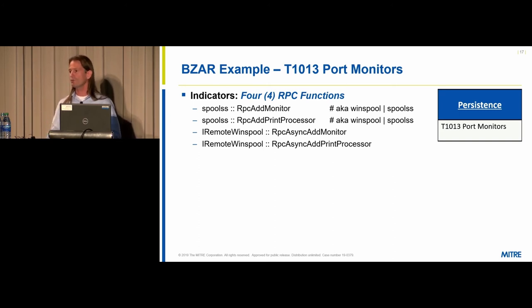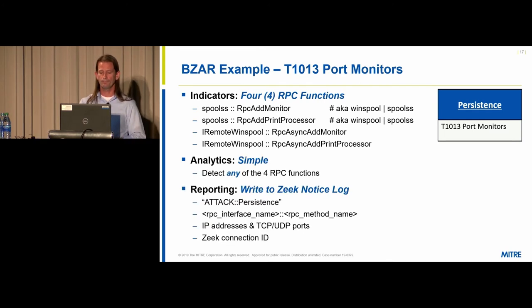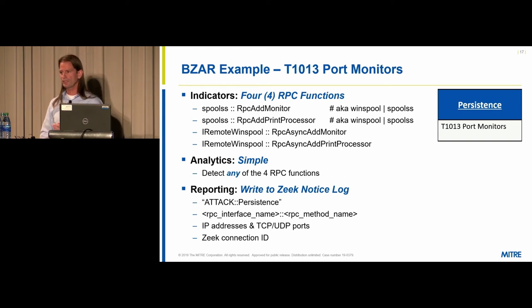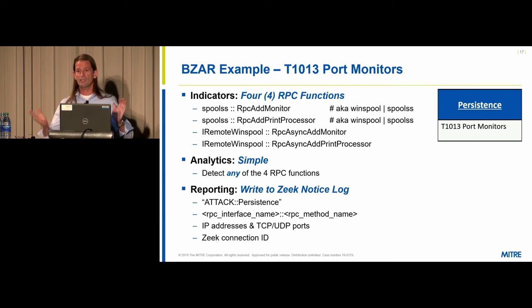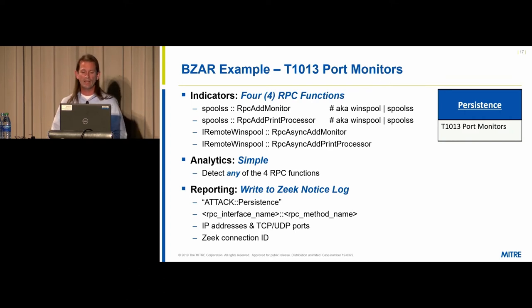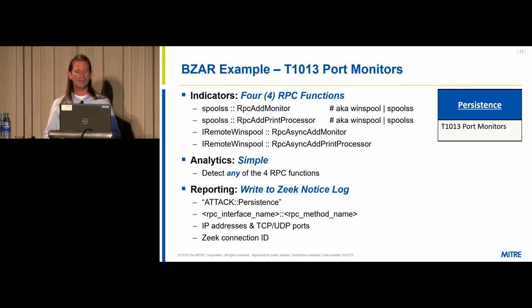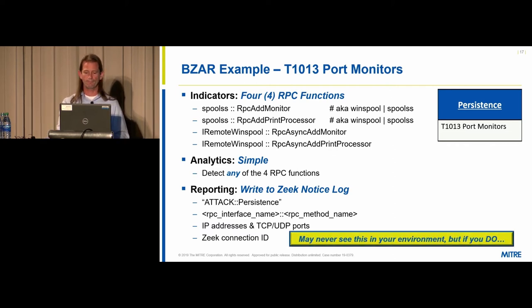The analytics for port monitors are the same presumption: if you ever see any of these four functions on your network, presume it's suspicious and take action to investigate. What gets written to the Zeek notice log: a statement like 'ATT&CK Persistence' with the interface name, method name, IP addresses, ports, and the Zeek connection ID. You may never see it, but if you do, you want to take action.